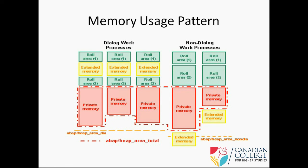So how memory is used by the system - talking about the dialogue work process first. Whenever I have to process something, I am going to use the role area first. I will do my processing there, then if this gets filled up I will use the extended memory. But if I have a quota in the extended memory or the extended memory is full, then I have to use the balance of my role area - that means role area total minus role area first.